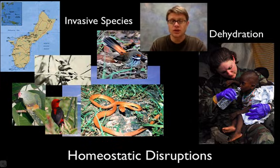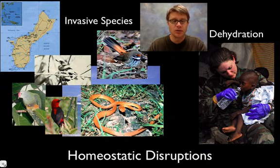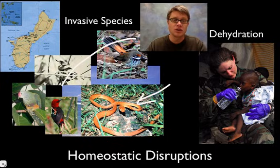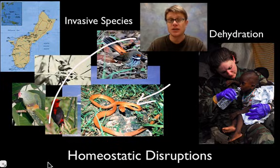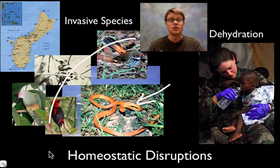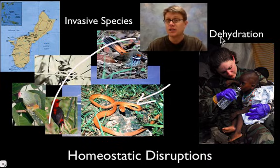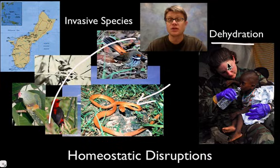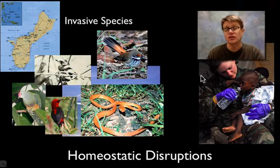Sometimes huge disruptions can disrupt homeostasis. For example, the brown tree snake was introduced into Guam and essentially wiped out all those bird species, because the ecosystem had evolved homeostasis reflective of the organisms that lived there at that time. A physiological disruption could be a decrease in water, leading to dehydration and some really severe consequences.